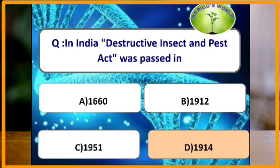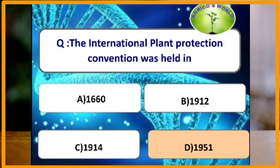In India, the Destructive Insect and Pest Act was passed in which year? It was passed in the year 1914. The International Plant Protection Convention was held in which year? It was held in the year 1951.